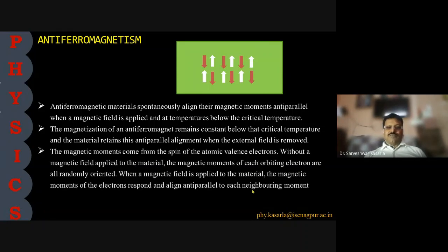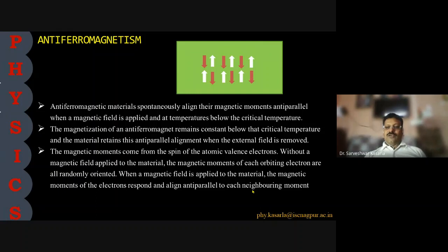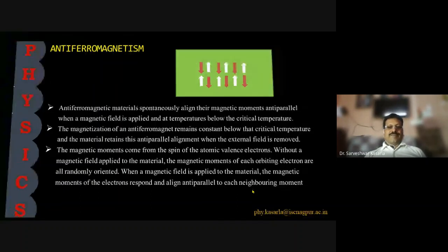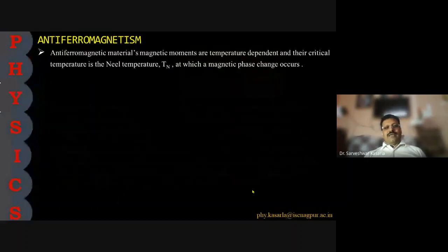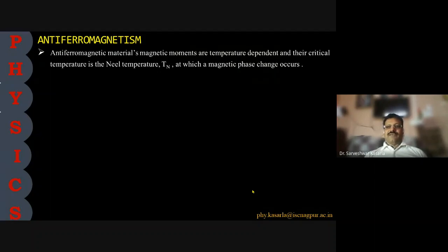The magnetic moments come from the spin of atomic valence electrons. Without an applied field, the magnetic moments of each orbiting electron are randomly oriented. When a magnetic field is applied, the magnetic moments of electrons align anti-parallel to each neighboring moment. The magnetic moments of anti-ferromagnetic materials are temperature-dependent, and their critical temperature is the Néel temperature T_N, at which a magnetic phase change occurs.